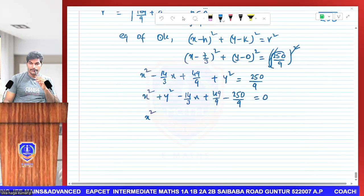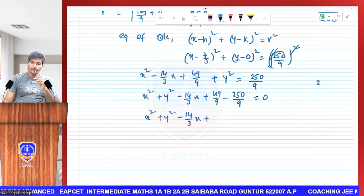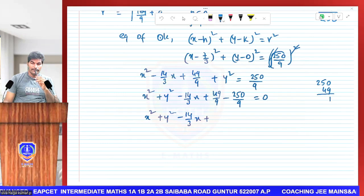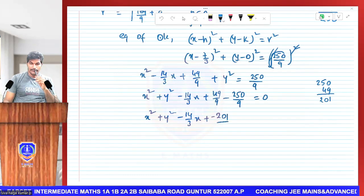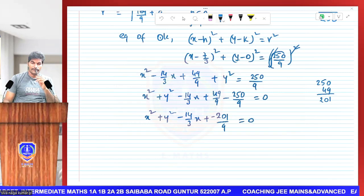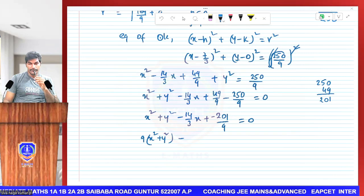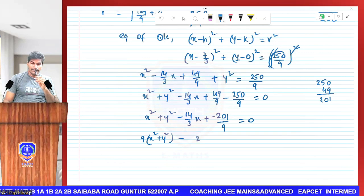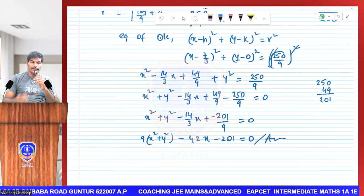This is the equation of circle. x² + y² - 14x/3 + (49 - 250)/9 = 0. -201/9 = 0. Therefore the equation: x² + y² - 14x/3 - 201/9 = 0, or multiplying by 9: 9x² + 9y² - 42x - 201 = 0 is the answer.